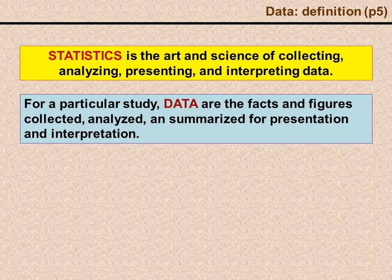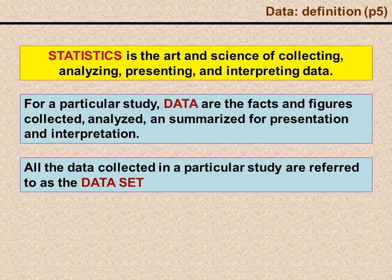For example, if we wanted to do a study on students and their demographics, the data would be the information we collect on things like their height, their race, their gender, anything that we might find interesting about these students. Once we've collected all of this data and we put it together, that is called a data set.